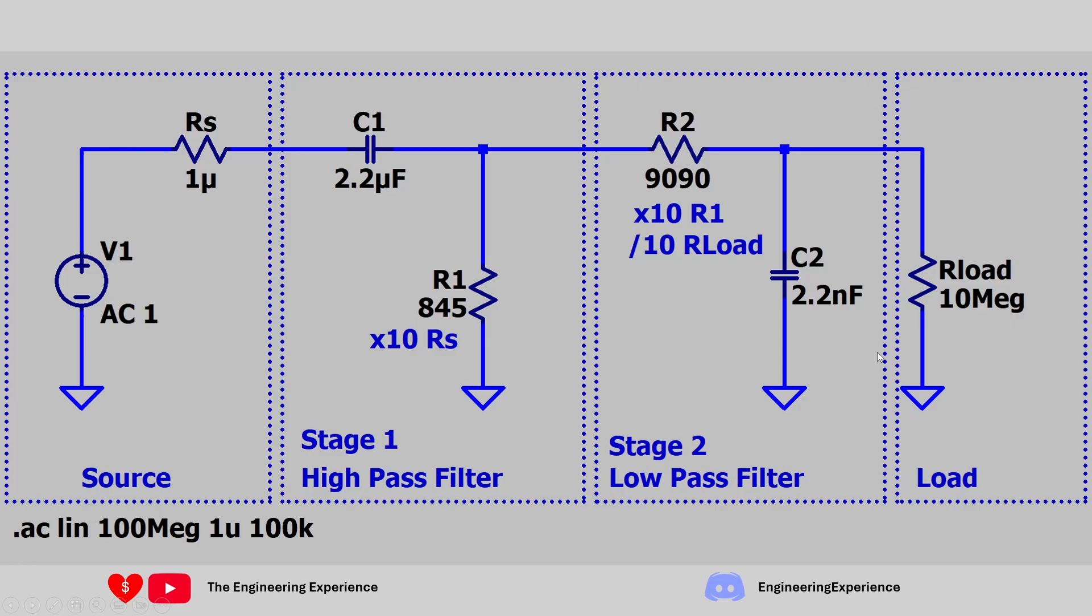Our total bandpass filter will look like this. On the left we have a source with very low output impedance, and on the right a load with very high impedance. Stage one is a high pass filter and stage two is a low pass filter with the component values we calculated. To create a bandpass filter we combined them together. Any frequency below 85 Hz coming through will get attenuated by this stage, and the second stage will cut off any frequencies above 8000 Hz.